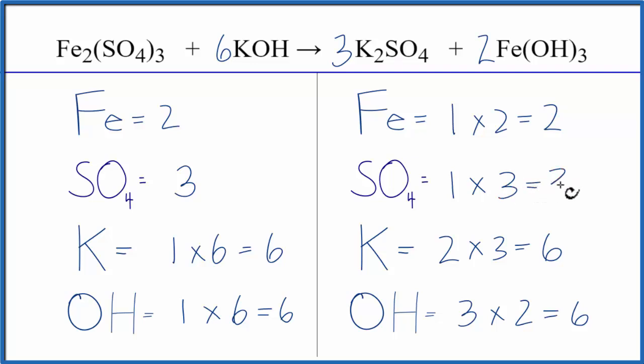So by counting these sulfates as one item or the hydroxides as one item, that means we don't have to count all of these oxygens and we can keep track of things a lot easier. This is Dr. B with the balanced equation for Fe2(SO4)3 plus KOH. Thanks for watching.